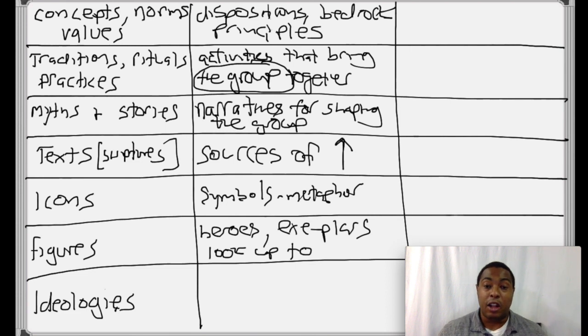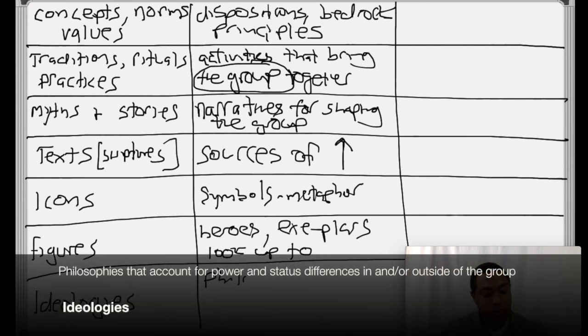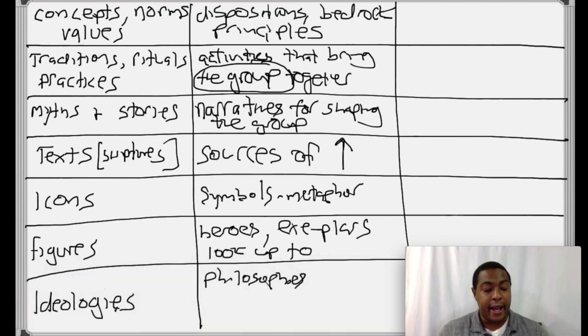And then lastly, we have ideologies. And ideologies are the sort of key philosophies that justify and result from the discourses that your group has. And I'm also going to say that they are also connected to power dynamics. They are structuring.